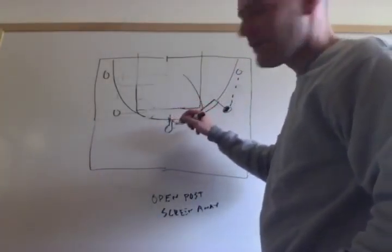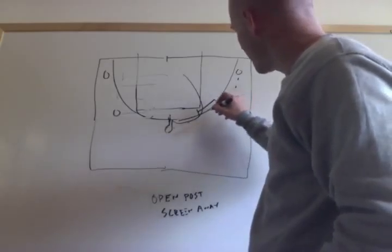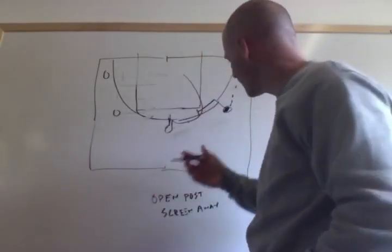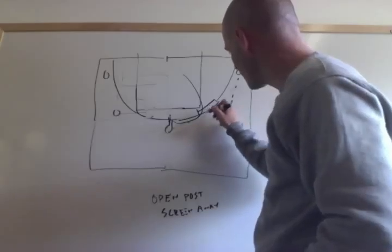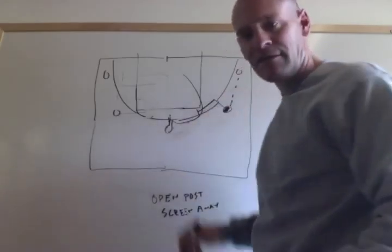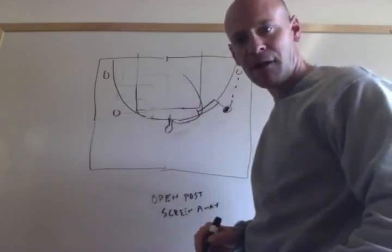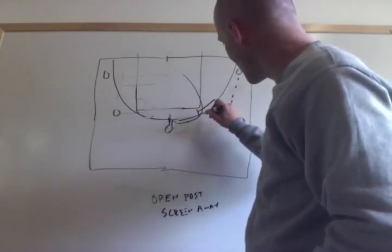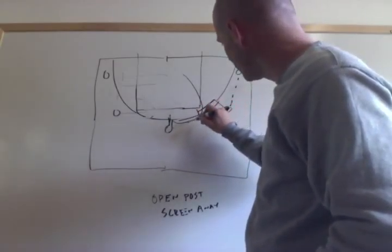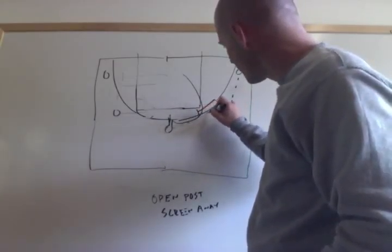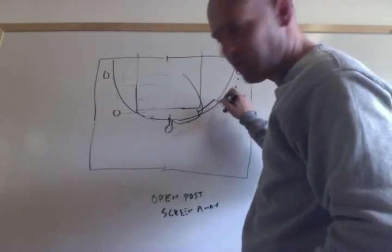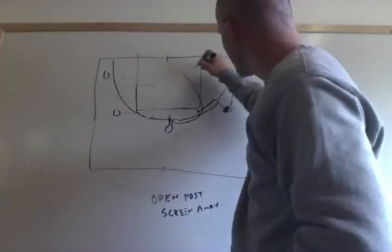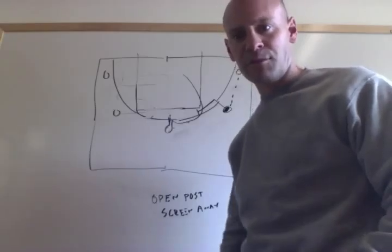In all situations, if the cut happens where the player goes all the way to the basket curl cutting after they've received the screen, the screener just replaces themselves right back where they were. If the player got the ball coming off the screen and caught it on the perimeter for a shot, then the screener can cut to the basket and they empty out to the perimeter.